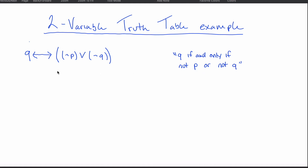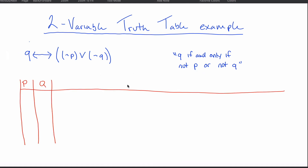If you're given either one of these two questions, what you want to do is start to set up your truth table. The variables involved here are P and Q, which will be the headings for two of my columns. I'll end up with four rows because if you have two variables you always end up with four rows — two times two equals four. The most common order is: true-true, true-false, false-true, false-false.